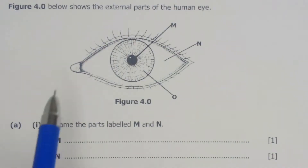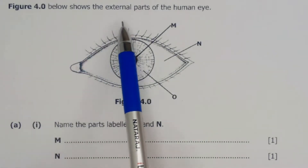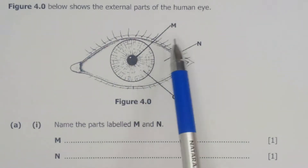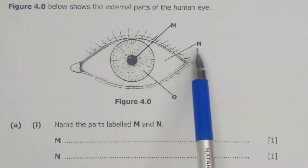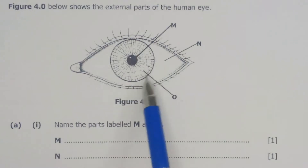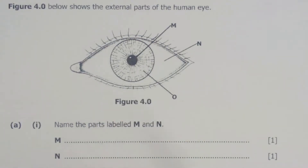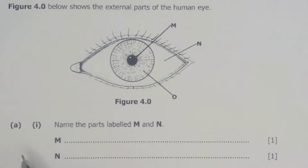So this is question number 4 and figure 4.0 below shows the external parts of the human eye. The parts labeled: we have M which is the dark part of the eye, N which is the white part of the eye, and O which is the colored part of the eye which can be brown, blue, or green depending on the person's genes.